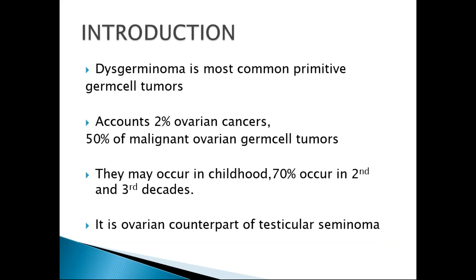Dysgerminoma is the most common primitive germ cell tumor. It accounts for 2% of all ovarian cancers overall, and 50% of malignant ovarian germ cell tumors. All dysgerminomas are malignant tumors. Dysgerminoma is seen in the ovaries of females, whereas seminoma is seen in the testis of males.